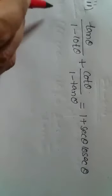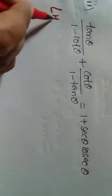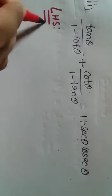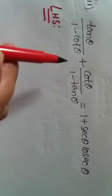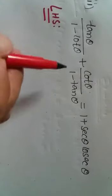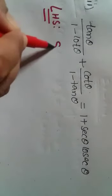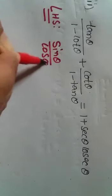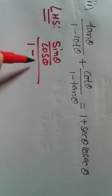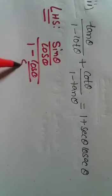First, we will take the LHS as we used to do. Our LHS is tan θ/(1 minus cot θ) plus cot θ/(1 minus tan θ). We will arrange this: tan θ can be written as sin θ/cos θ, divided by 1 minus cos θ/sin θ.